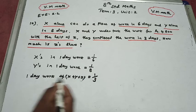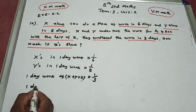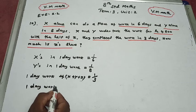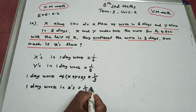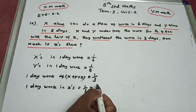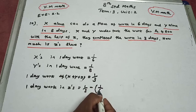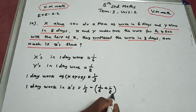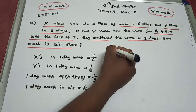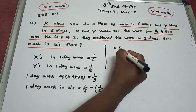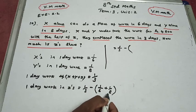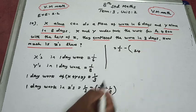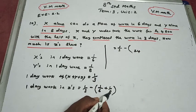Z's 1-day work equals 1/3 minus (1/6 plus 1/8). To subtract these fractions, we find the LCM of 6 and 8, which is 24. So cross-multiplying: 8 over 24 plus 6 over 24, giving us 4 times and 3 times over 24.